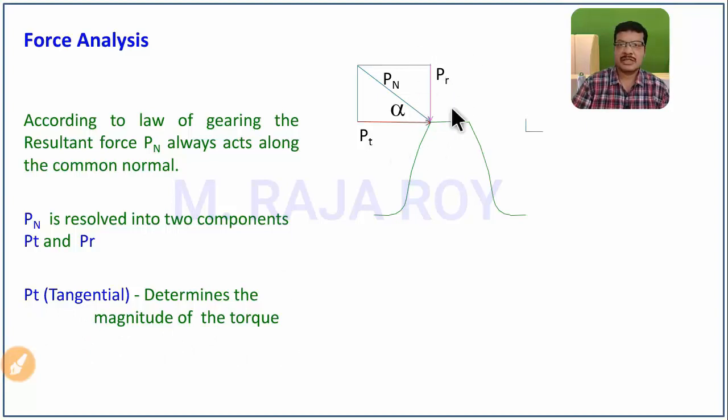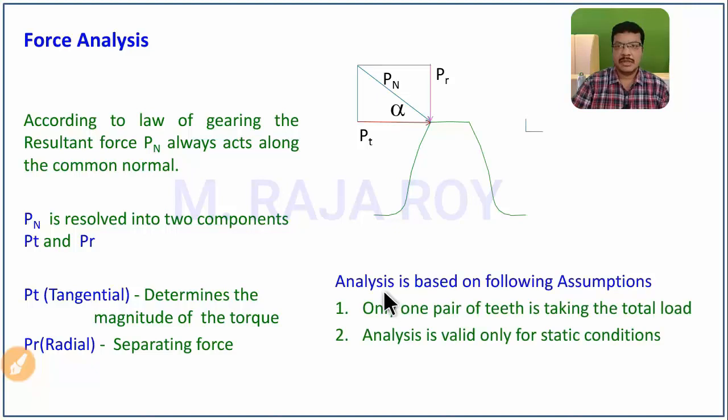Pr is called the separating force. This Pr acts to separate the two gear wheels. To compensate the separating force Pr, we place bearings and keep the shaft inside those bearings.